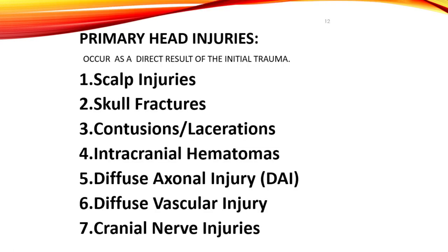Primary injuries include: scalp injuries such as lacerations, abrasions, or hematomas, which are visible externally and may require suturing or wound management; skull fractures, which can be linear, depressed, basilar, or open; contusions and lacerations, which are bruised areas or tears in brain tissue often occurring at the site of impact; intracranial hematomas, which are accumulations of blood within the intracranial space including subdural, epidural, and intracerebral hematomas; diffuse axonal injury, DAI, which is widespread damage to nerve fibers resulting from shearing forces during the traumatic event.